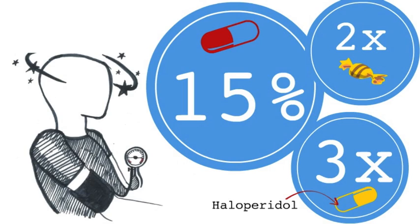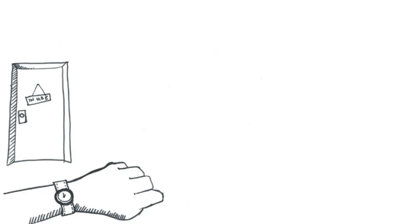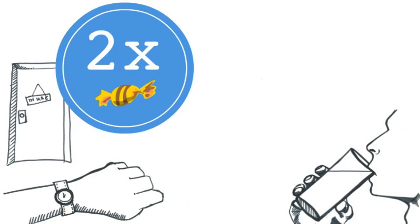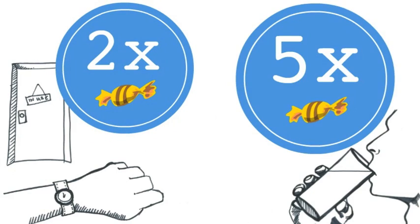Chlorpromazine also causes what's known as anti-muscarinic side effects, which include constipation and a dry mouth. The review found that you're twice as likely to have constipation and 5 times as likely to have a dry mouth if you take chlorpromazine compared to if you take a placebo.